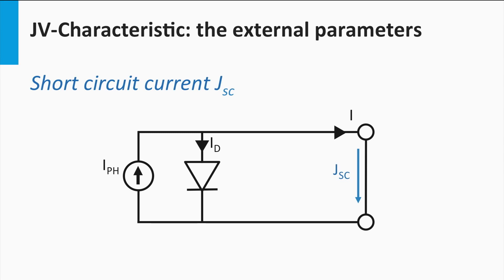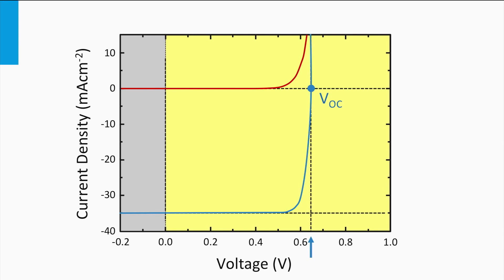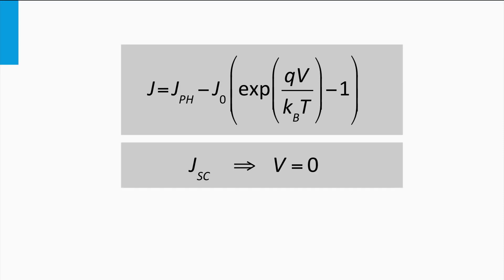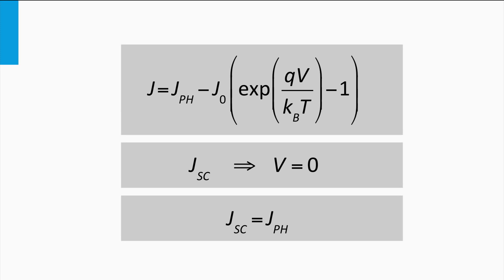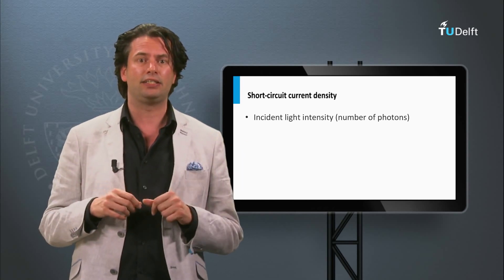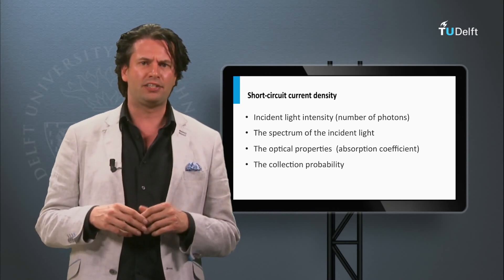If we short circuit both terminals of the solar cell, the illuminated solar cell will solely produce a current and will produce no voltage. This current density is called the short circuit current density. It can easily be recognized in the JV curve as the intersection between the vertical line corresponding to zero voltage and the JV curve. For an ideal solar cell, setting voltage equal to zero shows that the short circuit current density equals the photocurrent density. The short circuit current density depends on factors like the incident light intensity, the spectrum of the incident light, the optical properties, and the collection probability.